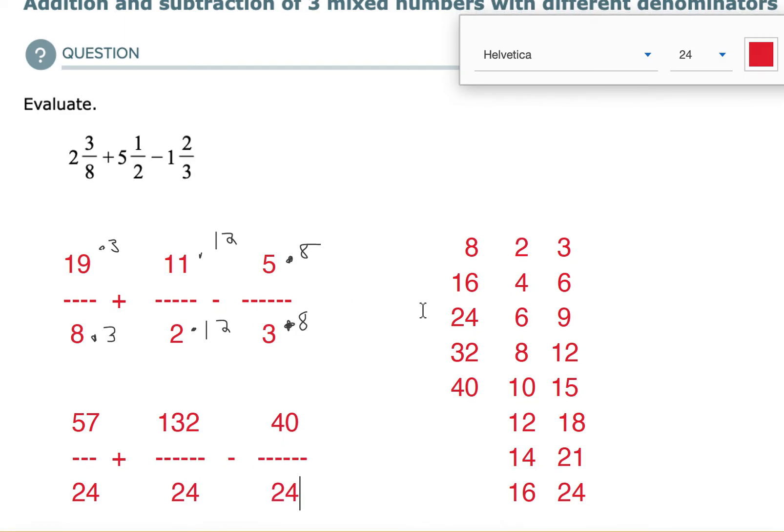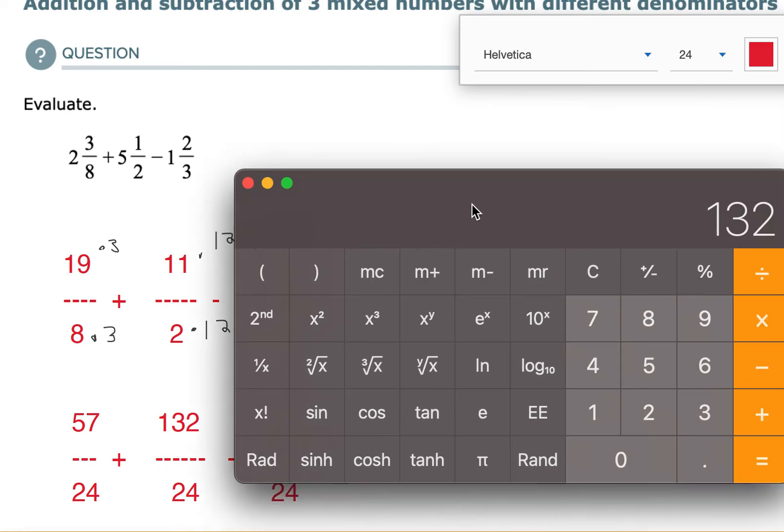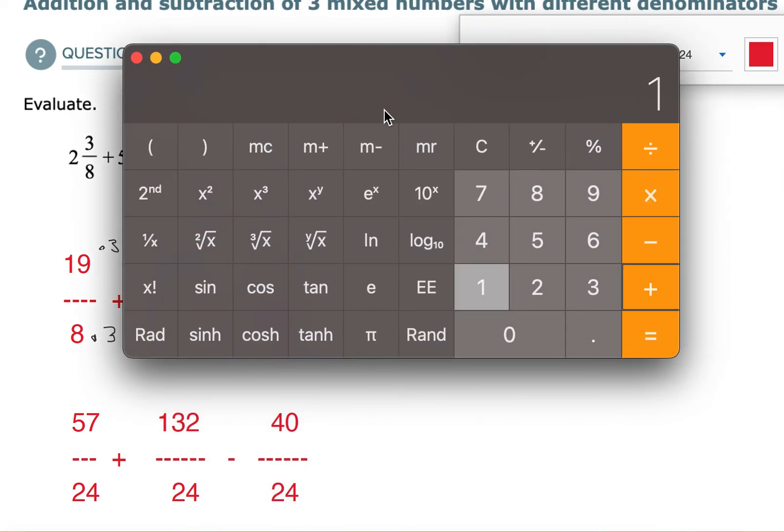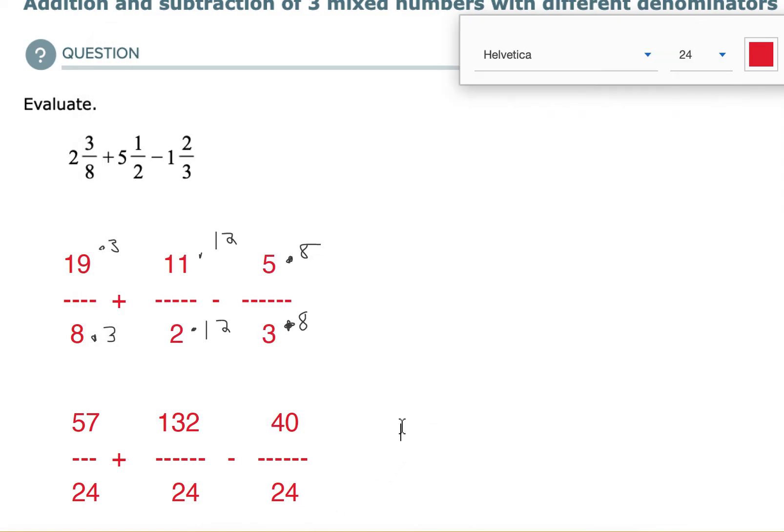So now that we have common denominators, now we can finally get to the final answer here. Well, I guess they're going to want it as a mixed number, but let's clear this. Now that they're common denominators, you can add straight across the top. You can just do 57 plus 132. And then that's a minus sign to the left of the 40. So I'm going to do minus 40 here. So we've got 149 over 24.